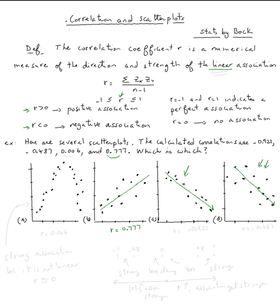So therefore, the r here will be bigger. This should be r equal negative 0.923, and this is supposed to be r equal negative 0.487.